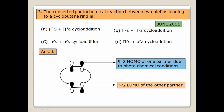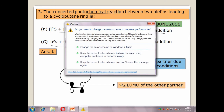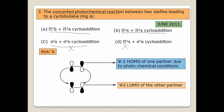Question number three: the concerted photochemical reaction. In cycloaddition reactions, supra-supra cycloadditions are generally possible. Supra-antara and sigma additions are not allowed, so D is eliminated. For a 4-electron system, supra-supra cycloadditions are photochemically allowed — already discussed in sigmatropic topics. So supra-supra is the right answer. The answer is B. Also note that ψ2 is the HOMO under photochemical conditions.